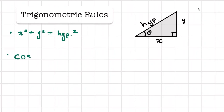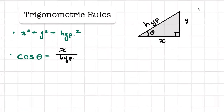Now if I want to find cosine of angle theta — if you remember SOH-CAH-TOA, cosine is adjacent over hypotenuse. From angle theta, my adjacent side is x over my hypotenuse. You can rearrange to find whatever you might need. If you want to find theta and you don't know what it is, you can do cosine inverse.